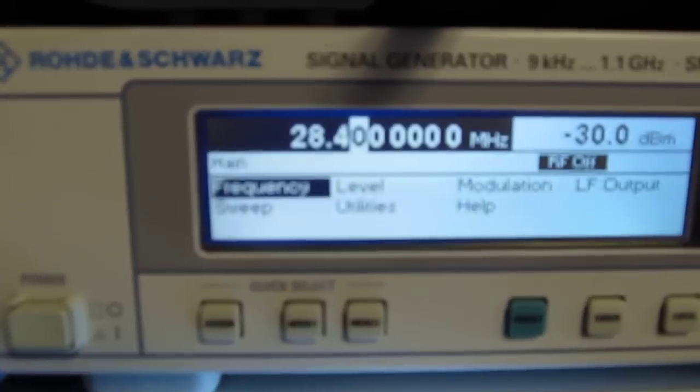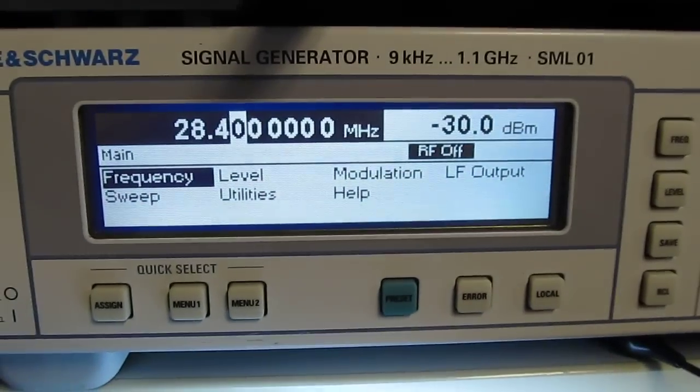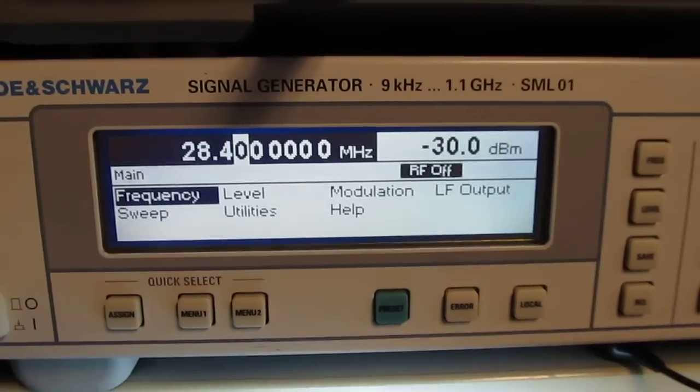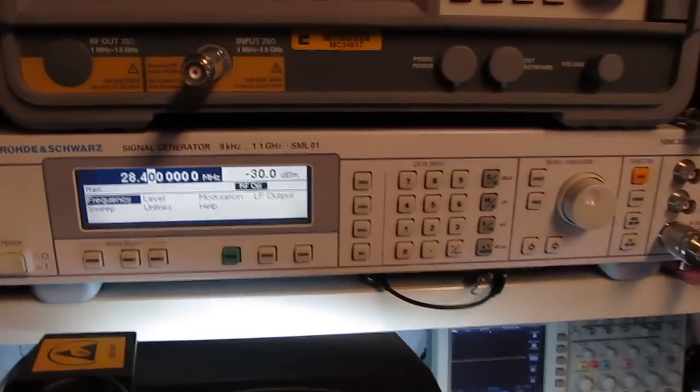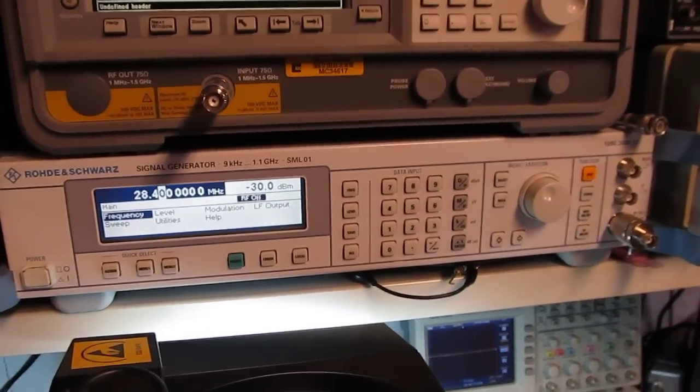Down below that is a Rohde & Schwarz signal generator. This is the SML01, covers up to about 1.1 gigahertz and very handy for doing some of the RF and high speed work that I get involved with.